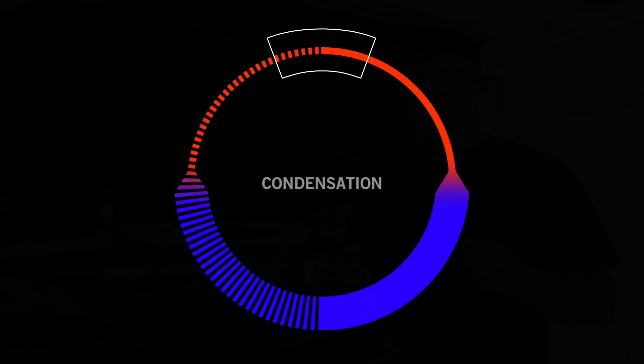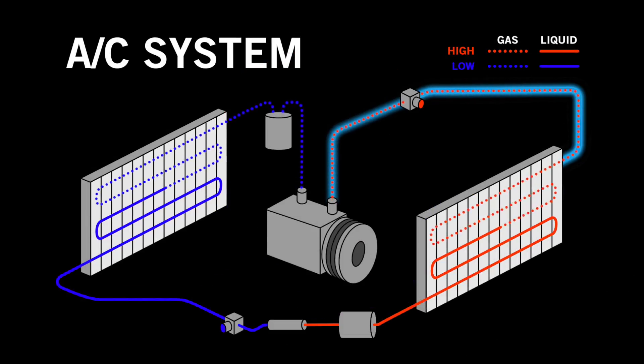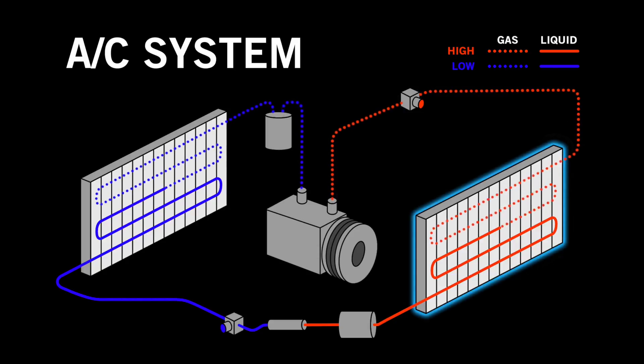In your AC, the hot high pressure refrigerant flows through the high pressure line to the condenser. It uses the air flowing through its fins to cool the refrigerant.